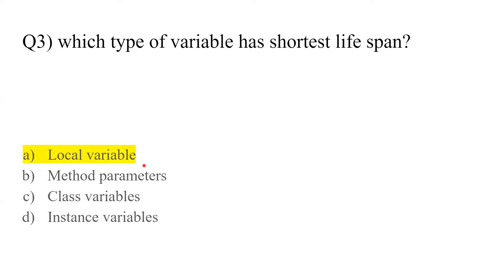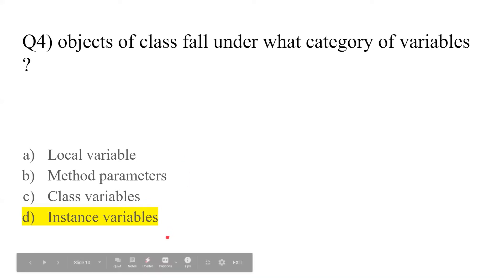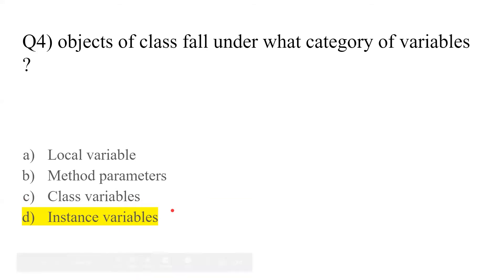Objects of a class fall under what category of variables? Whenever we create an object of a class, it falls under instance variables.